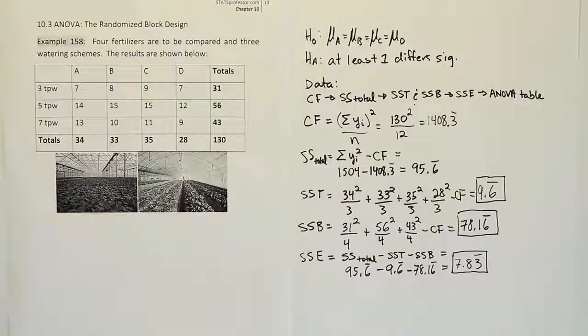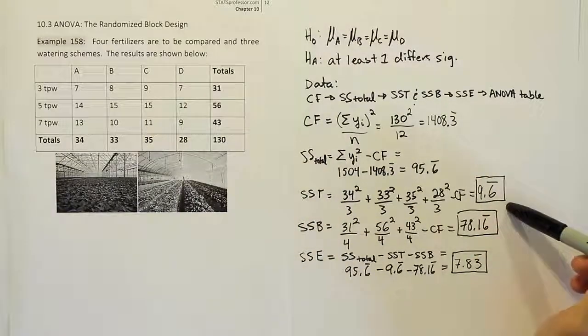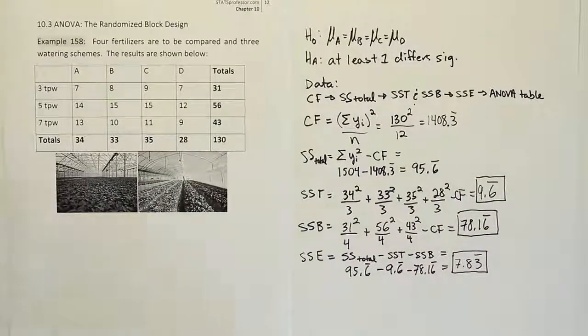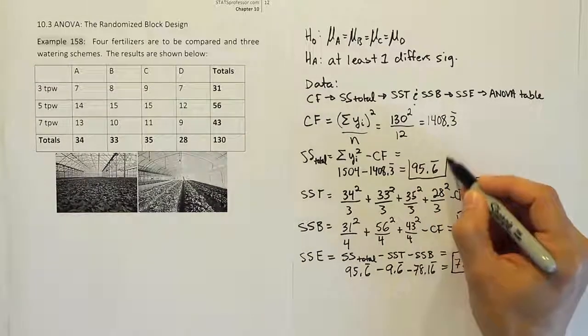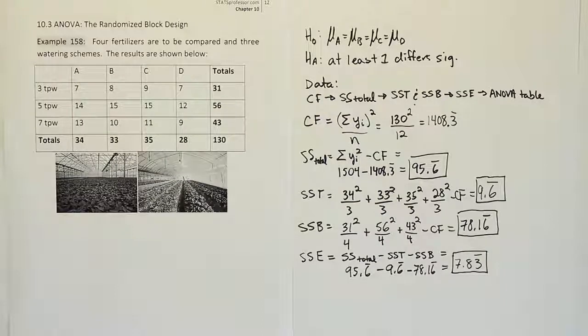Alright. Now, we need to go to our ANOVA table now and take all this information with us to plug into our ANOVA table. So we're going to need the total sum of squares. We're going to need the sum of square for treatment, sum of square for blocks, sum of square for error. And that will all go into our ANOVA table. And that's what we're going to do next.